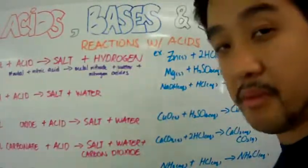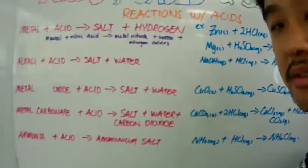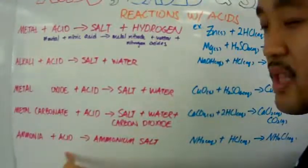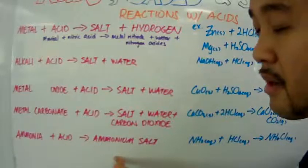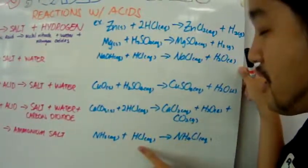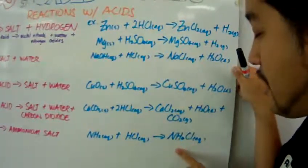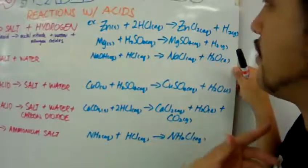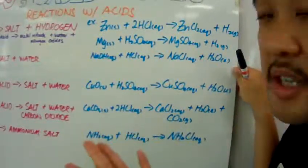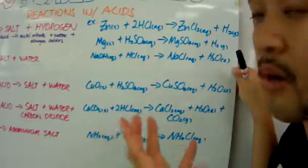And finally, our example with ammonia reacting with acid, and you're basically getting this ammonium salt. Very easy. Ammonia plus HCl, you get ammonium chloride. That's it. These are some basic examples of reactions involving acids.